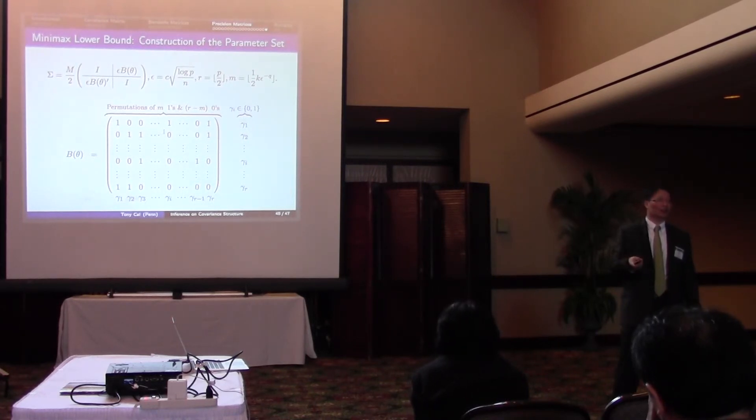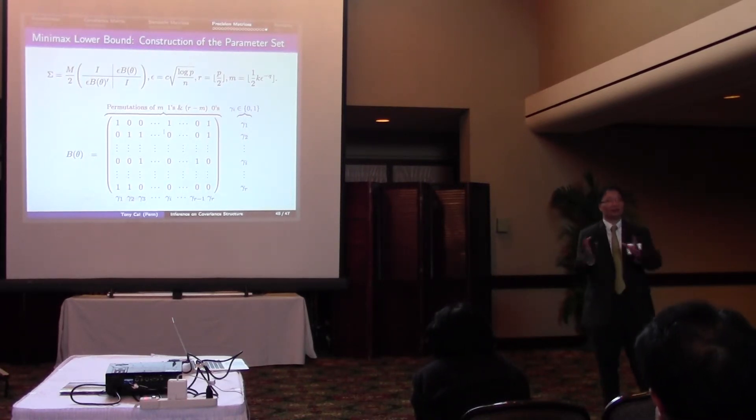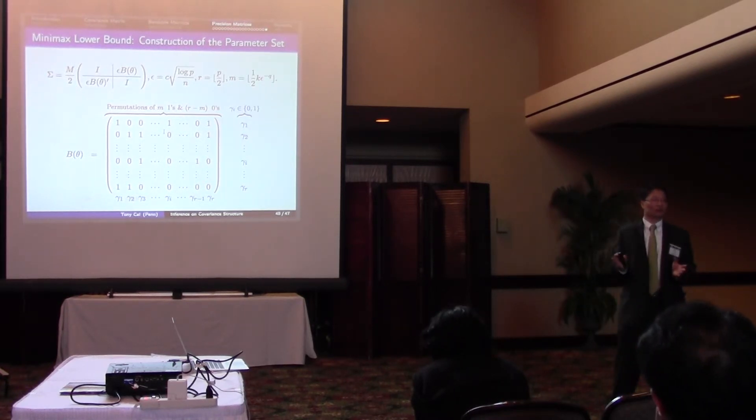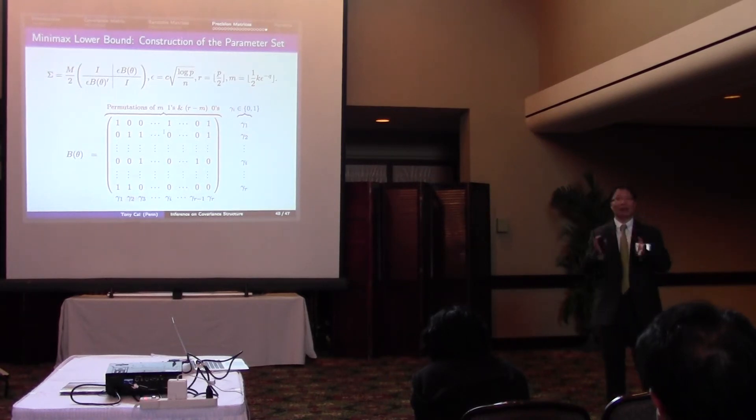So you can imagine, in this finite collection of matrices, the total number is very large. And it turns out you can make an argument that the number has to be large.